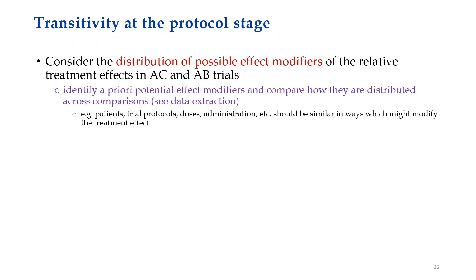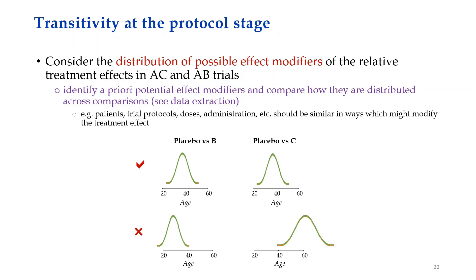We should consider whether the distribution of possible effect modifiers is similar across the different comparisons. A priori, we should identify the potential effect modifiers, and once we have the data, we should compare them to see whether they are distributed similarly across the different comparisons. These characteristics relate to patients, trial protocol, different doses, different administration routes, etc. For example, if age is an effect modifier, the distribution of age in studies comparing placebo versus B and placebo versus C should be similar. If the distributions are very different, transitivity is violated.